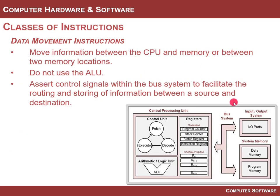If you look at types of instructions, regardless of RISC or CISC, there are basically three general classes. The first is called data movement instructions. These are instructions that move information back and forth between the memory system, I/O, and registers in the CPU. If you bring information from memory into a register, we call that a load or move. If you move information from a register out into the memory system, we call that a store or another move. This is very common — you bring in information, manipulate it, and send it out.